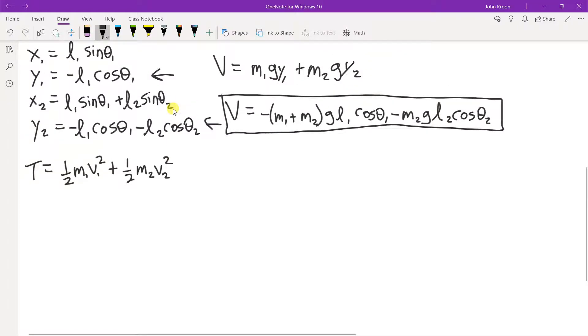So we have one half m1 v1 squared plus one half m2 v2 squared. Now here's the thing, so we need to write down an expression for the velocity.